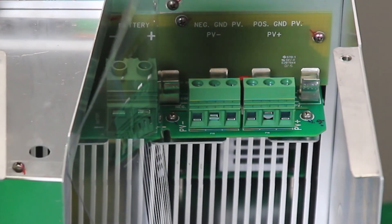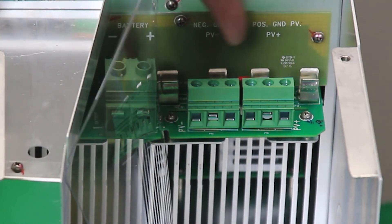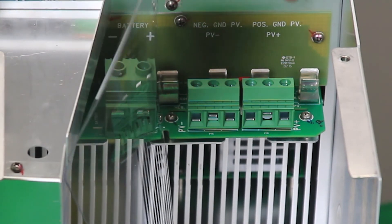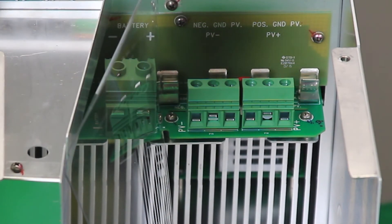And then up here at the top, we have the ground fault fuse holders. So this particular model can be negative grounded on the array, it can be positive grounded on the array, or it can have a floating array.